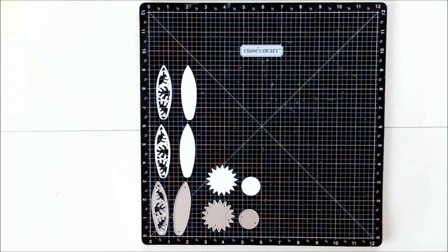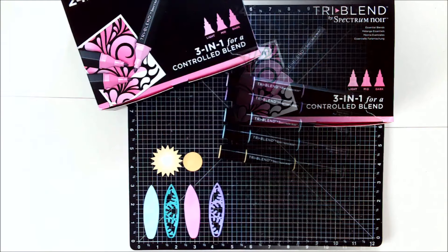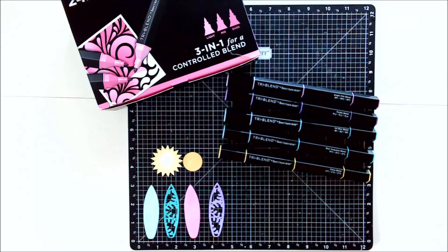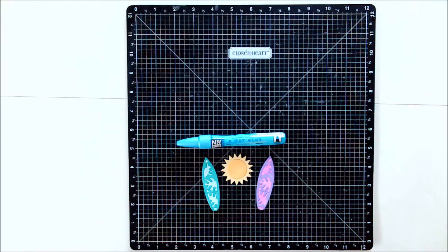And for the surfboards and sun, I'm going to be coloring those with my Spectrum Noir Tri-Blend Alcohol Ink Markers, which is why I die-cut them from white cardstock. But I could have also cut them out of solid color cardstock or even pattern cardstock, but I like to color them. And then I glued the layers together with my Zig Two-Way Glue Pen.